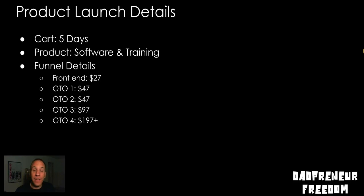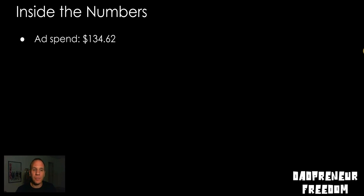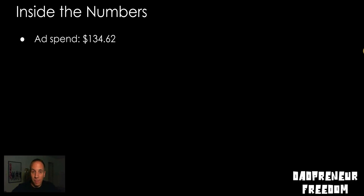We capped that off at $297, so after the first 20 sales it stayed at $297. Inside the numbers: the ad spend was $134.62. This was a retargeting campaign — we didn't run any cold traffic, didn't build an email list, didn't do any lead magnet or nurture sequence. This was purely a JV affiliate launch where we had people mail for us. They were compensated 100% on the front end and 50% throughout the back of the funnel.